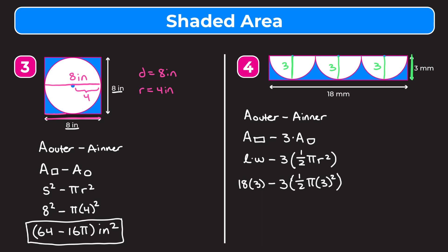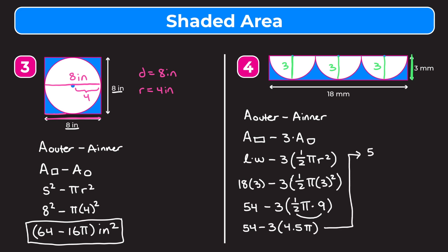Now we simplify: 18 times 3 gives us 54, minus 3 times the quantity in parentheses. Inside the parentheses: one half times pi times 9. Multiplying one half by 9 gives 4.5, so we have 4.5 pi. Then 3 times 4.5 is 13.5 pi. So the shaded area is 54 minus 13.5 pi millimeters squared. You can leave it in terms of pi or use your calculator for a decimal approximation.